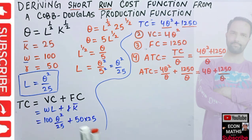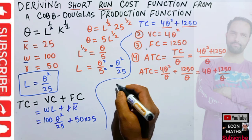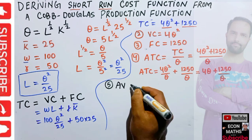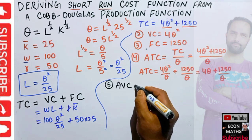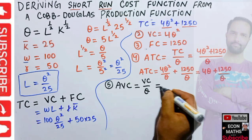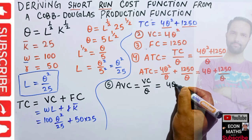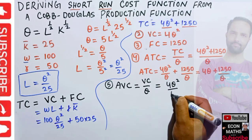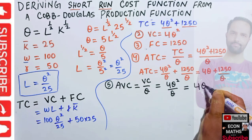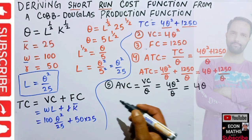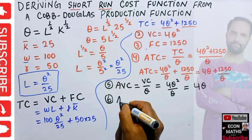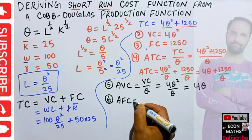The fifth cost is average variable cost. Average variable cost equals variable cost divided by output. Variable cost is 4Q², so dividing by Q: one Q cancels, leaving AVC = 4Q.